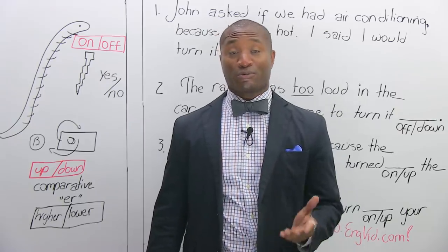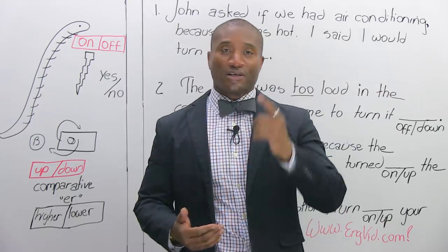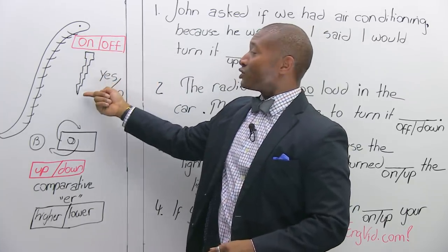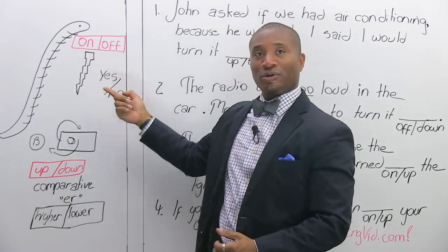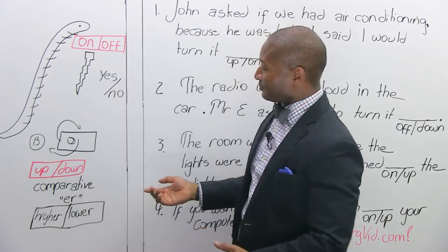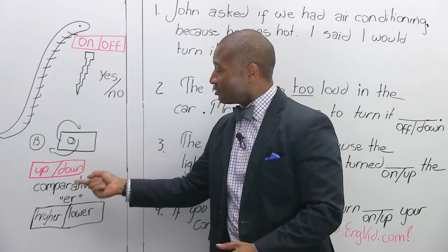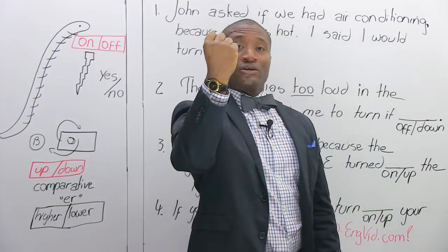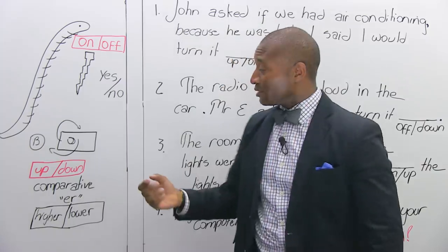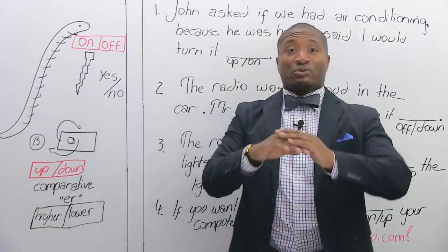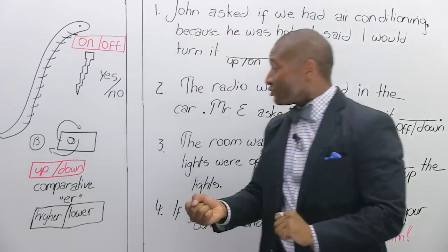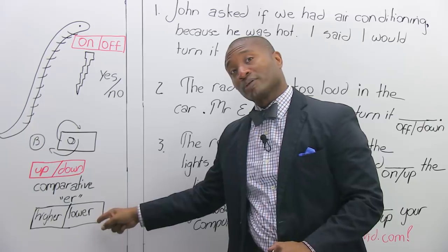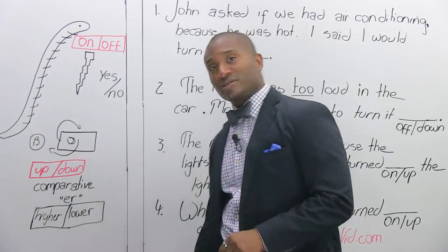Let me do a quick recap — that means to go over something again to help you remember. On or off, we're talking about power. Think yes or no. Do I want it on? Do I want it off? When we go up and down, it's comparative — think higher or lower. So we turn on the power or turn off the power like the light. When we go up or down, something is changing in intensity or direction, so it's going to higher volume or lower volume. We have four sentences to look at.